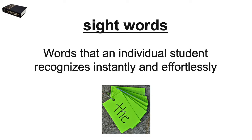Sight words are words that an individual student recognizes instantly and effortlessly. This is a really common term, but it's not always used accurately. First of all, the words that an individual student knows on sight are just that — individual. There are lots of grade-level lists of sight words out there that say all students should know these, and those can be a useful guide, but which words become sight words and when is dependent on the individual student's reading development, not on a list.